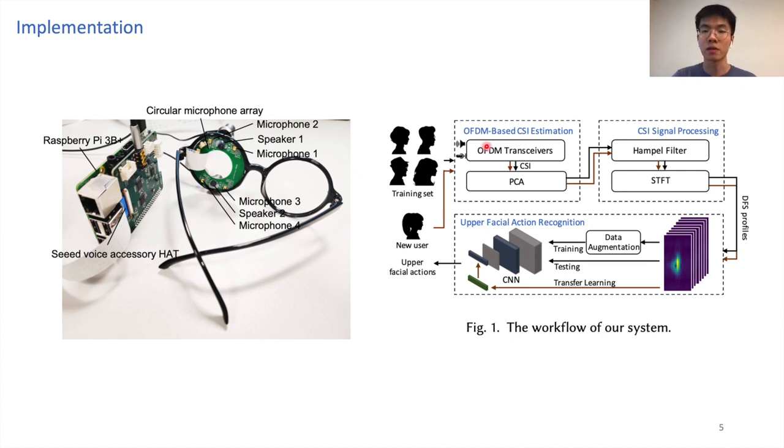The software system consists of three main components: OFDM-based CSI estimation, CSI signal processing, and UFA recognition. In the rest of this talk, I will briefly introduce the three components. For the system details, please refer to our paper.